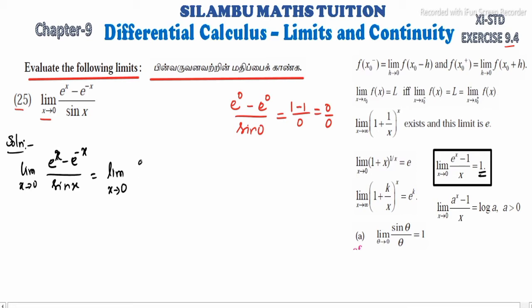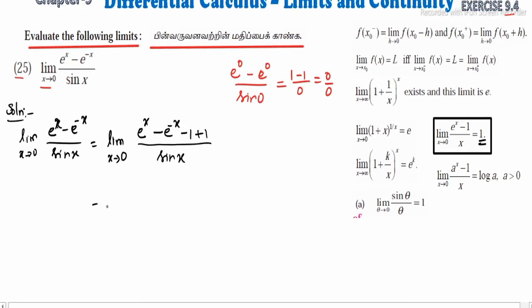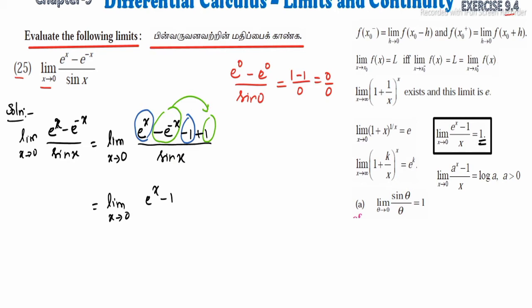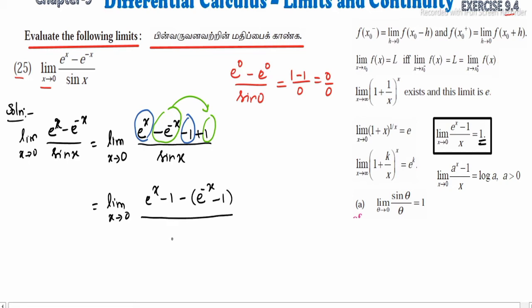Limit x tends to 0, e power x minus e power minus x minus 1 plus 1, whole divided by sin x. Now grouping: limit x tends to 0. First part: e power x minus 1 grouping. Next, minus e power minus x plus 1 grouping — that is, minus of e power minus x minus 1, whole divided by sin x.